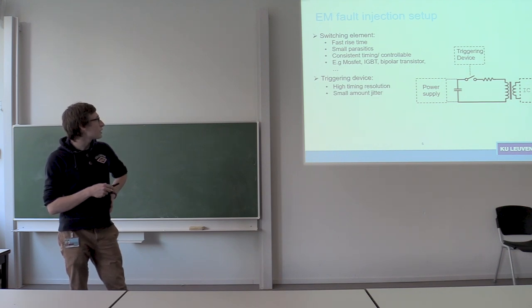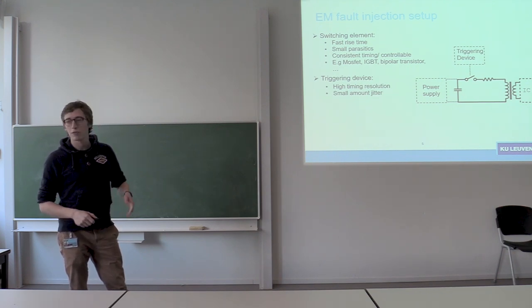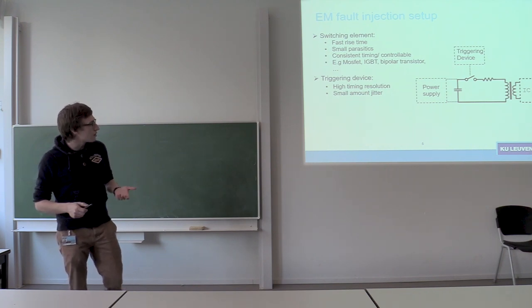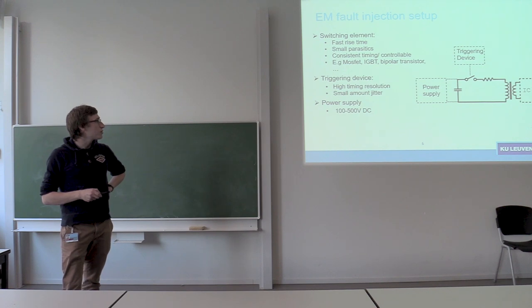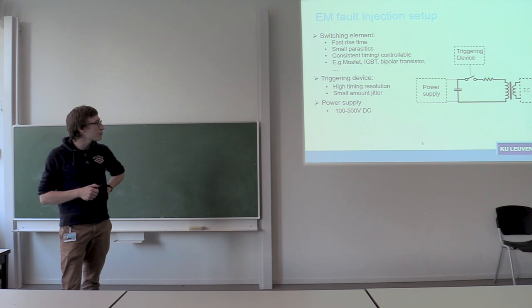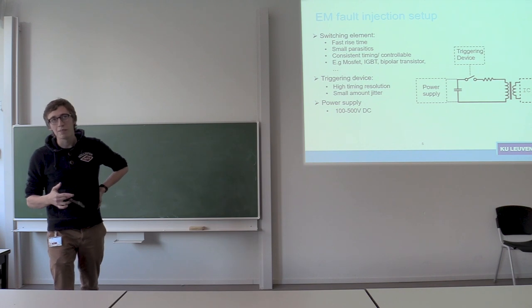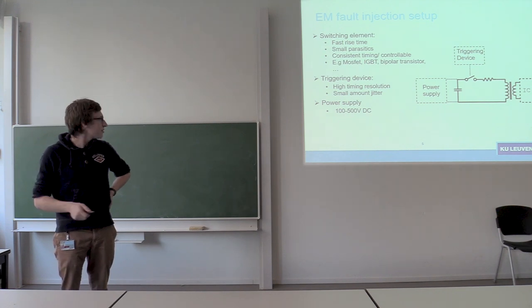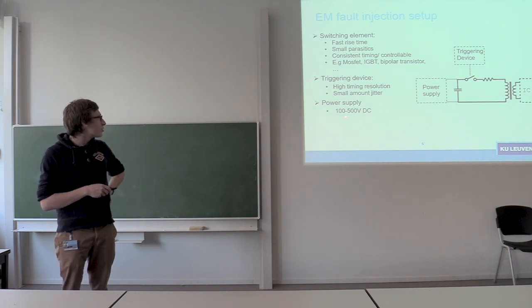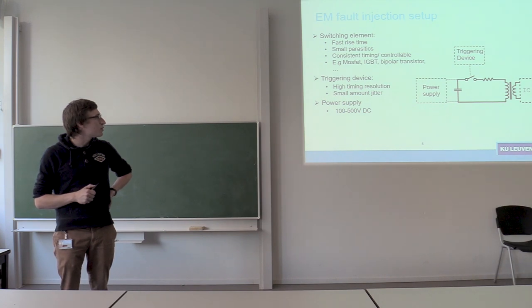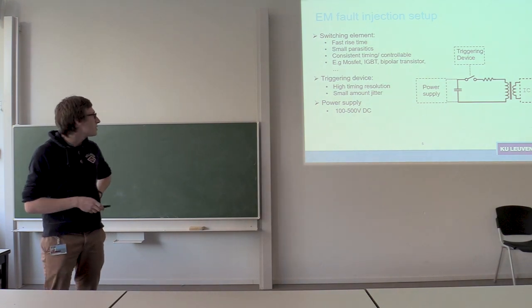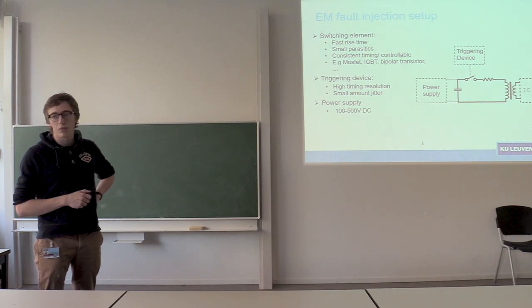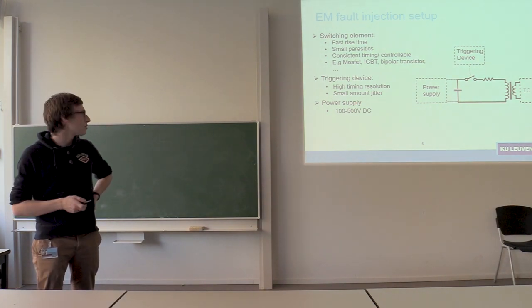Another thing is the triggering device itself that will trigger your switching elements. So as I said before, you need high timing resolution and you want them to have a small amount of jitter. Then you have your power supply. In general, these power supplies are picked within 100 and 500 volt DC. The reason why there's a limit of 500 volt DC is more or less because that's the maximum where common passive components are rated to. If you want to go higher than 500 volts, these things become very very expensive. So the 500 volts is more a choice of practicality than to be an ideal DC voltage. In general you want this thing to be as high as possible, or you want to be able to go as high as possible with your DC voltage.